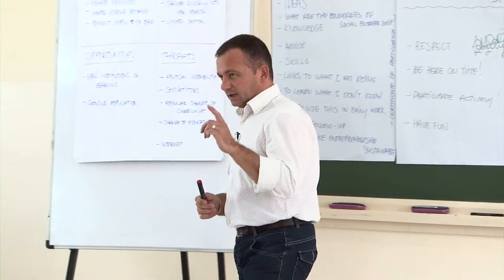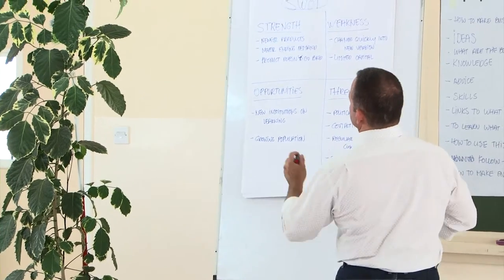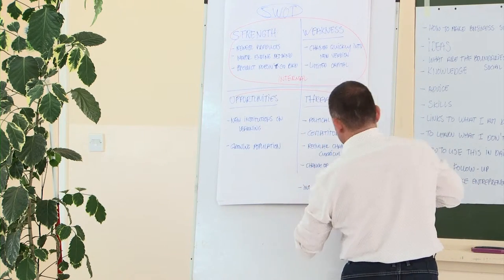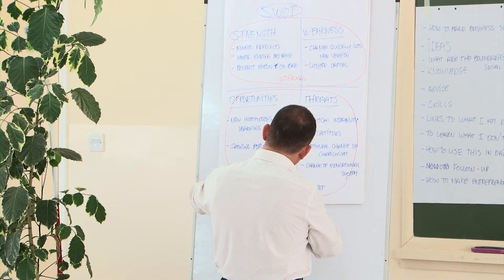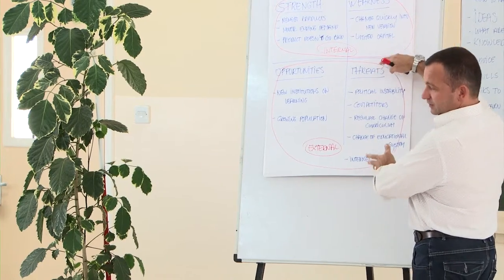What you actually seem to know already is that strengths and weaknesses — these two things — are, as we call it, internal. You can influence these. The other ones — opportunities and threats — are external. You cannot change that. Political instability, you cannot influence. Internet — it's there, whether you like it or not. You have to deal with it. So opportunities and threats are external; you cannot influence them. Strengths and weaknesses are in your own hands.